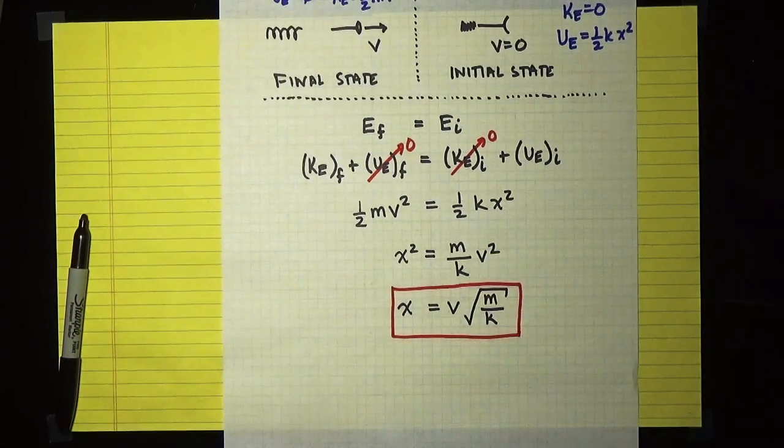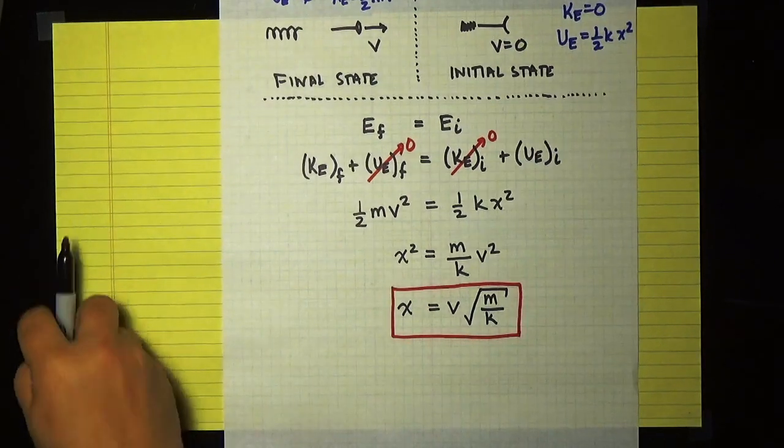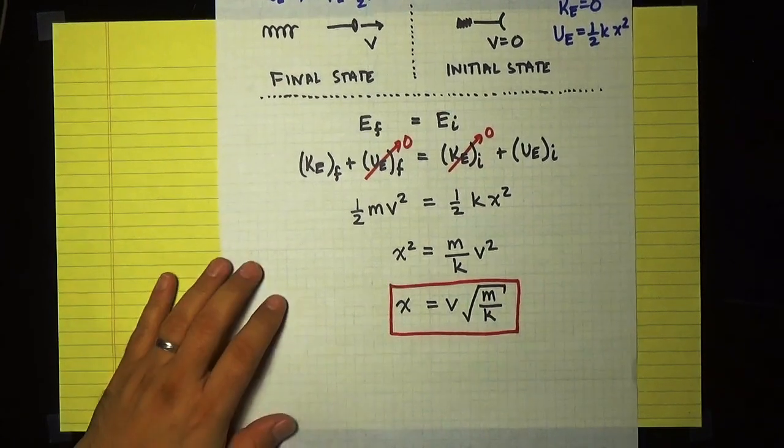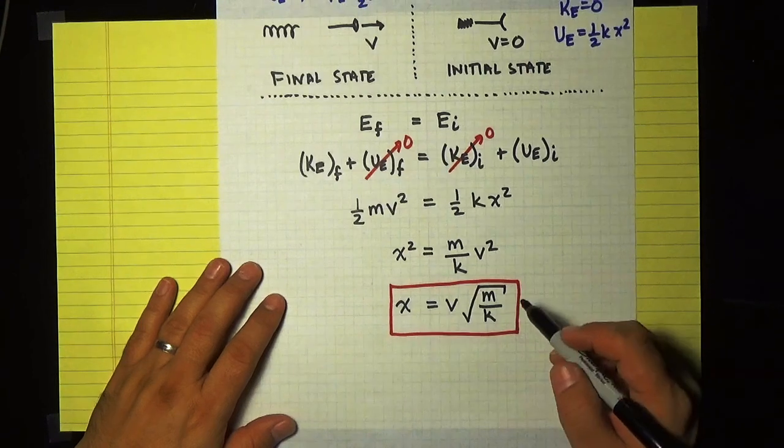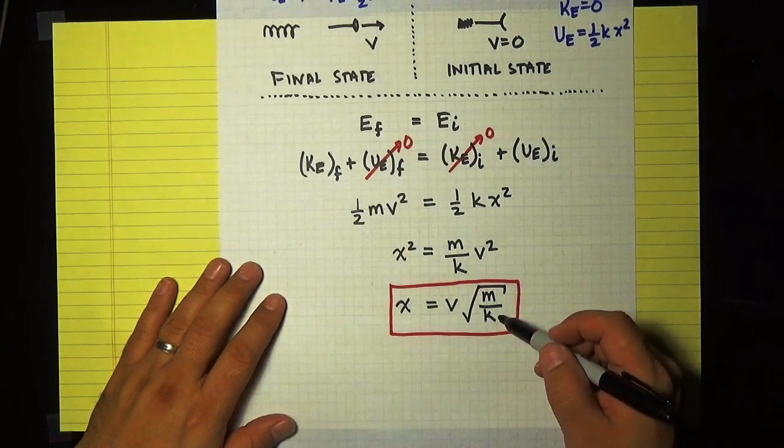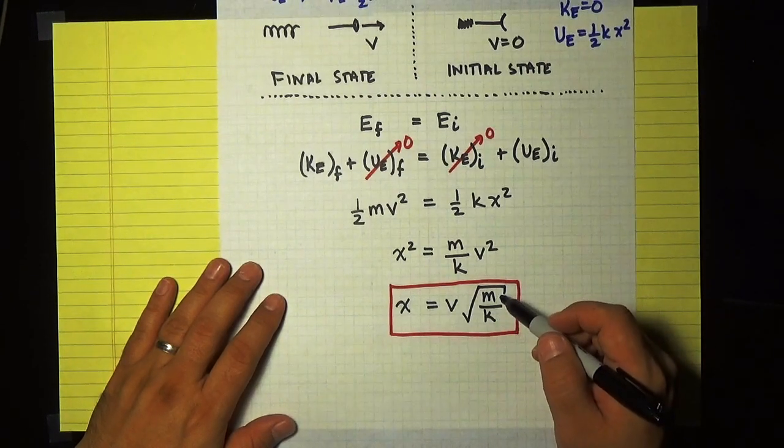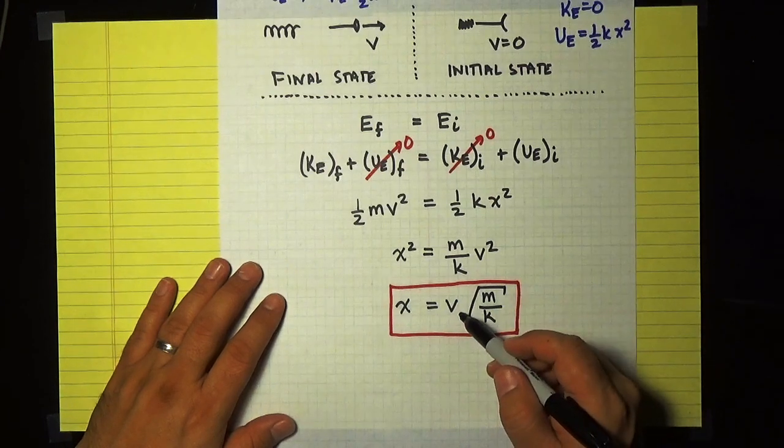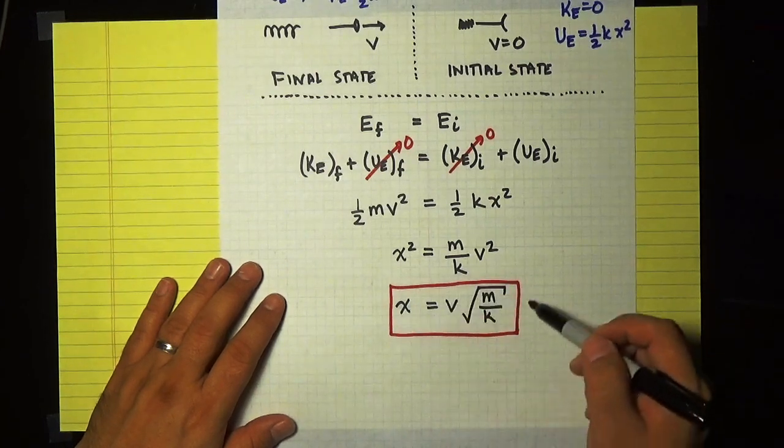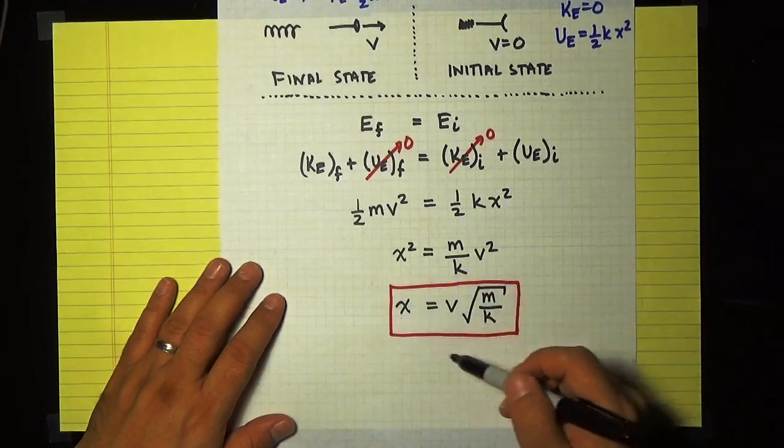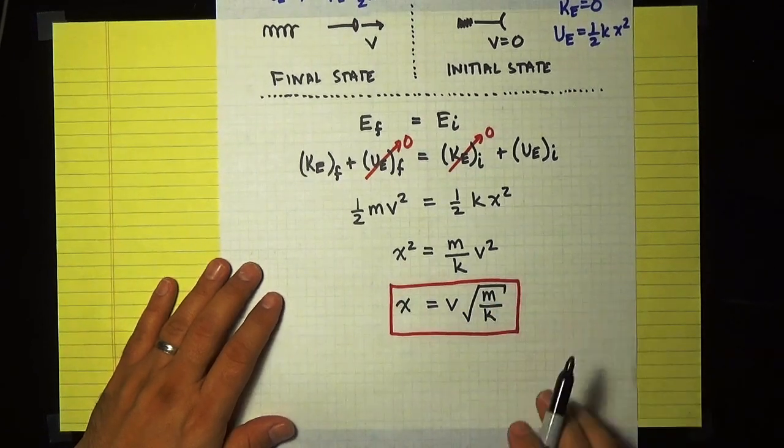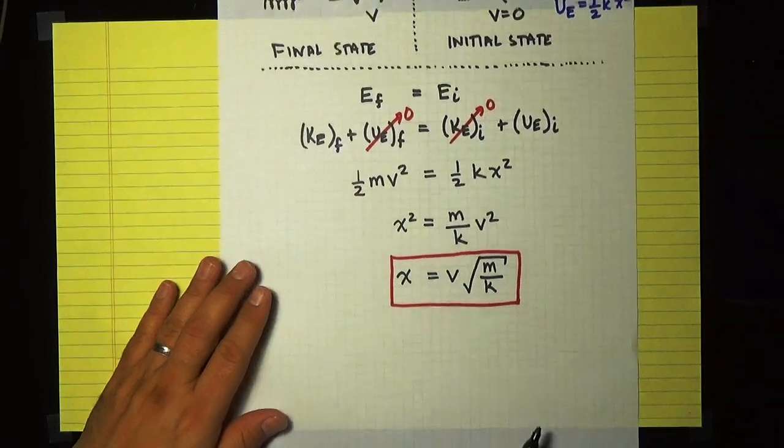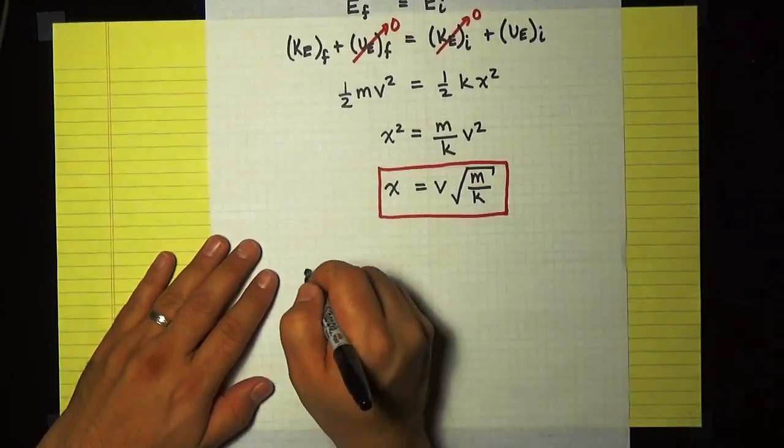Now it's very useful to do things algebraically because at this point, you could try many different parameters. If you were doing this in a laboratory, you might have several different springs you wanted to work with. You might have several different darts you wanted to work with. Maybe you're trying to get different speeds. And if you'd solve the problem algebraically, you can do it just once and just plug in new numbers for each of the different physical situations that you might consider. In this case, we're told the parameters of interest.